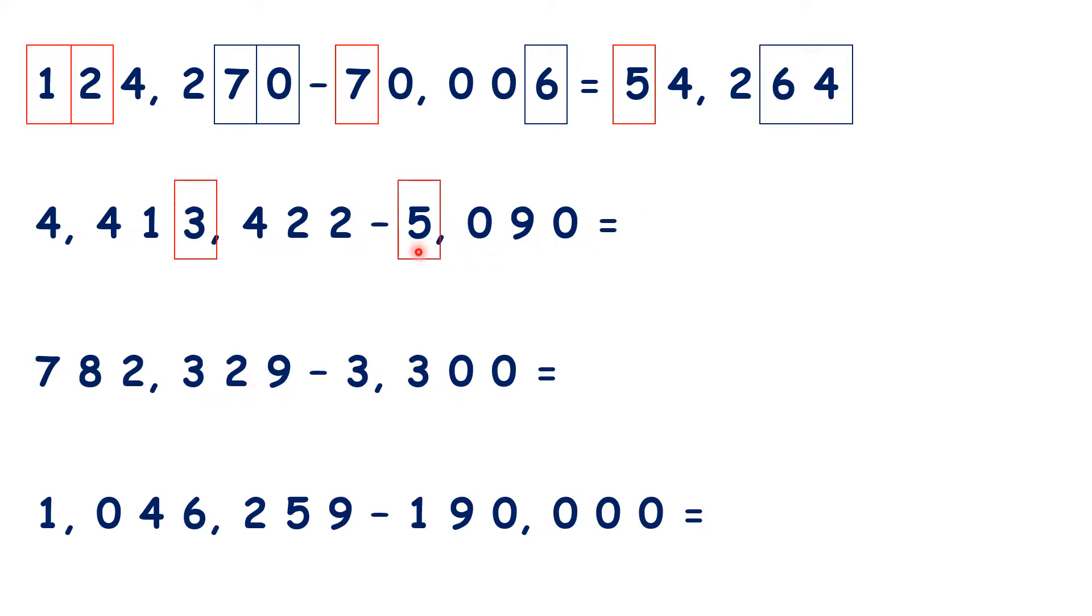We're subtracting 5 thousands, but we can see that our ten thousands digits will need to change as well. And we're subtracting 9 tens, but we can't subtract 9 from 2, so our hundreds digits will also change. So our answer is 4,408,332, because we subtracted 5 from 13 to make 8, and we need to write 08 so that our place values stay the same.